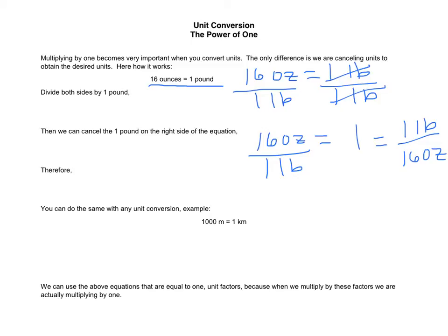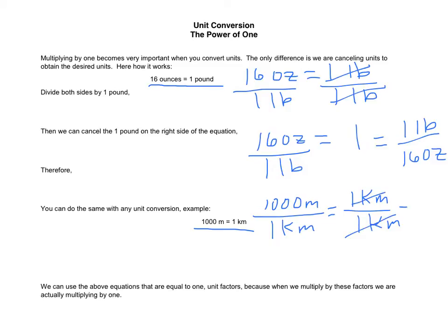We can do this with any unit. For instance, 1,000 meters equals 1 kilometer. We can divide by 1 kilometer, giving us 1,000 meters divided by 1 kilometer equals 1. We can cancel out the 1 kilometer, which equals 1.